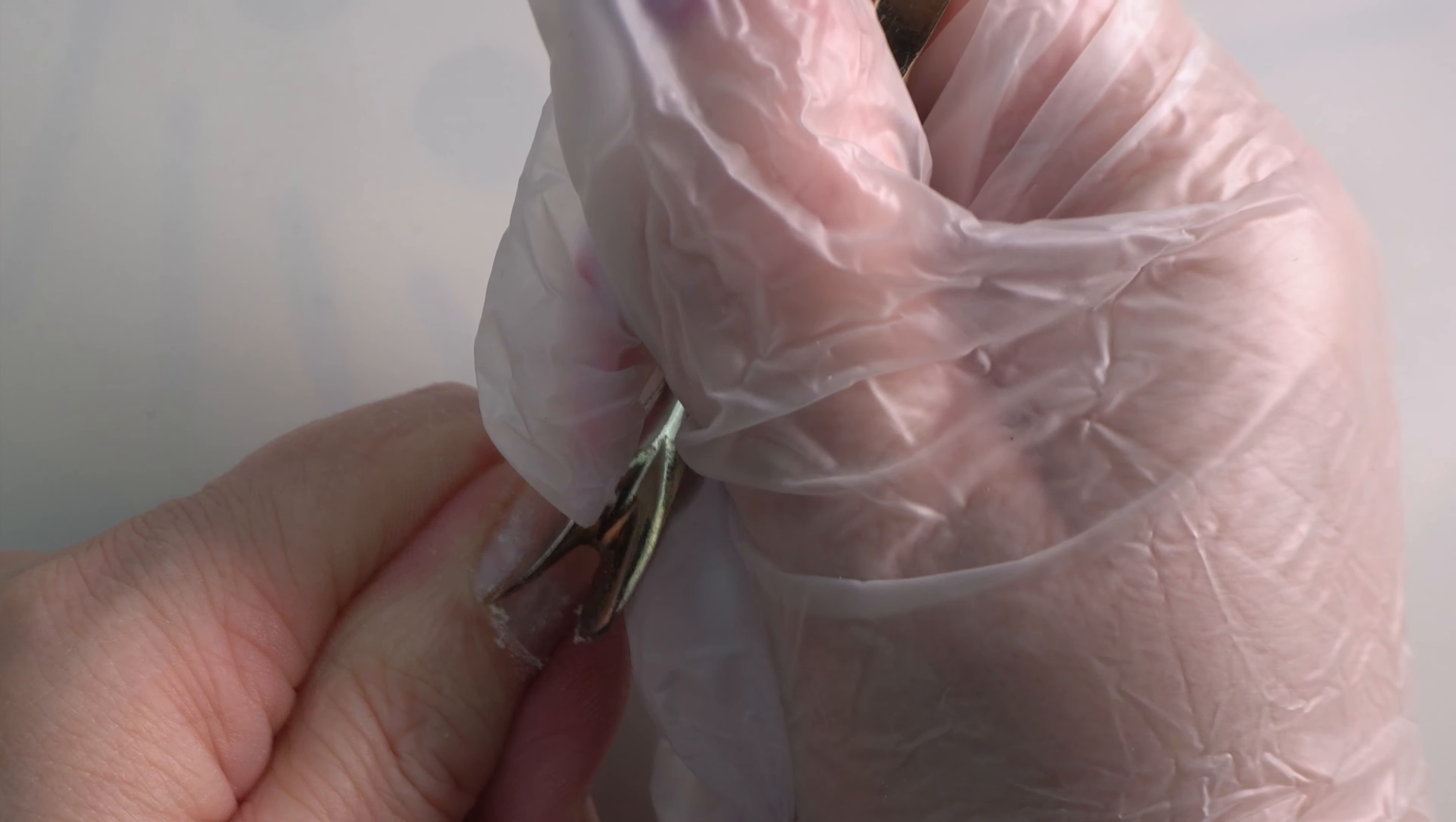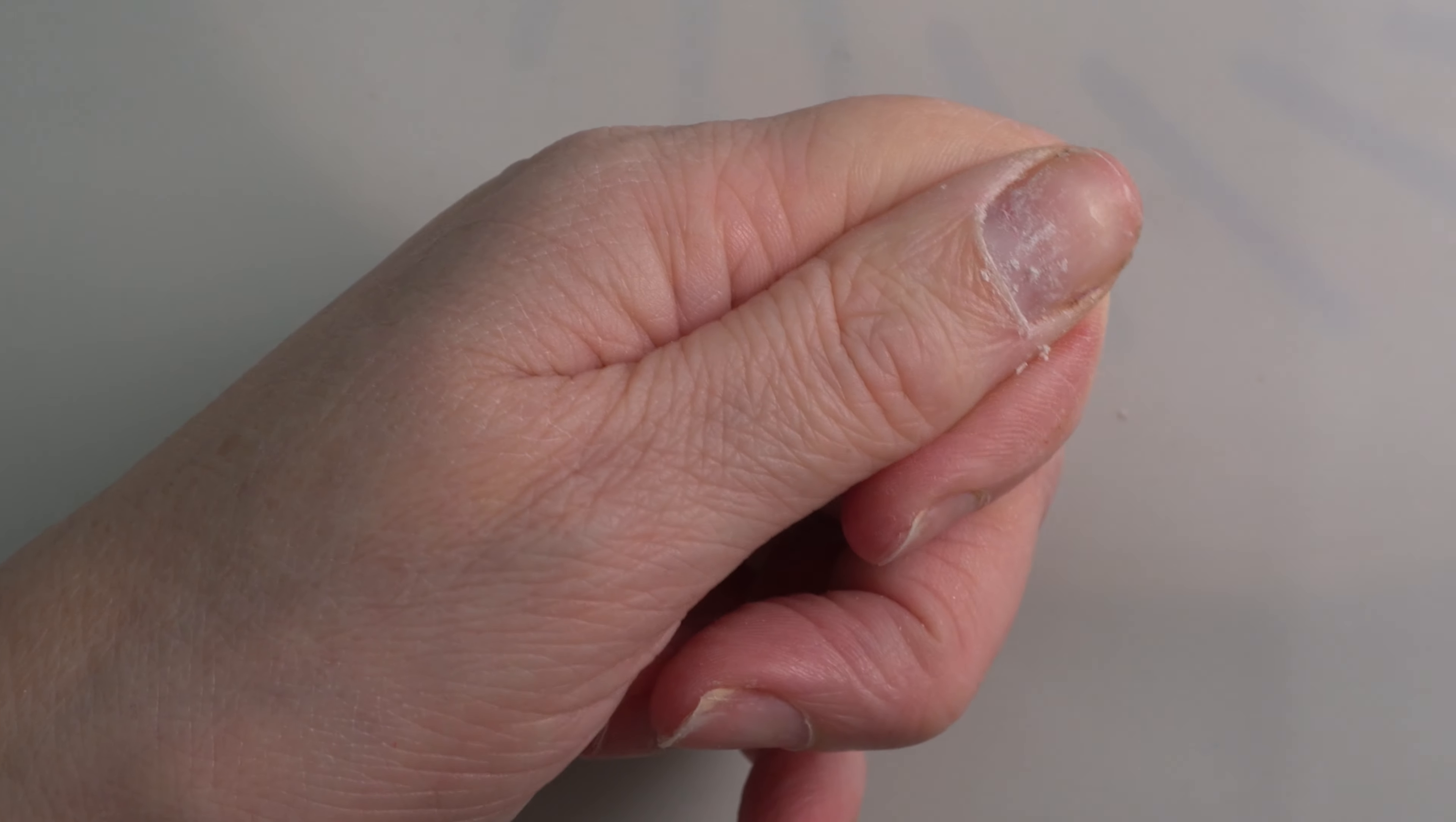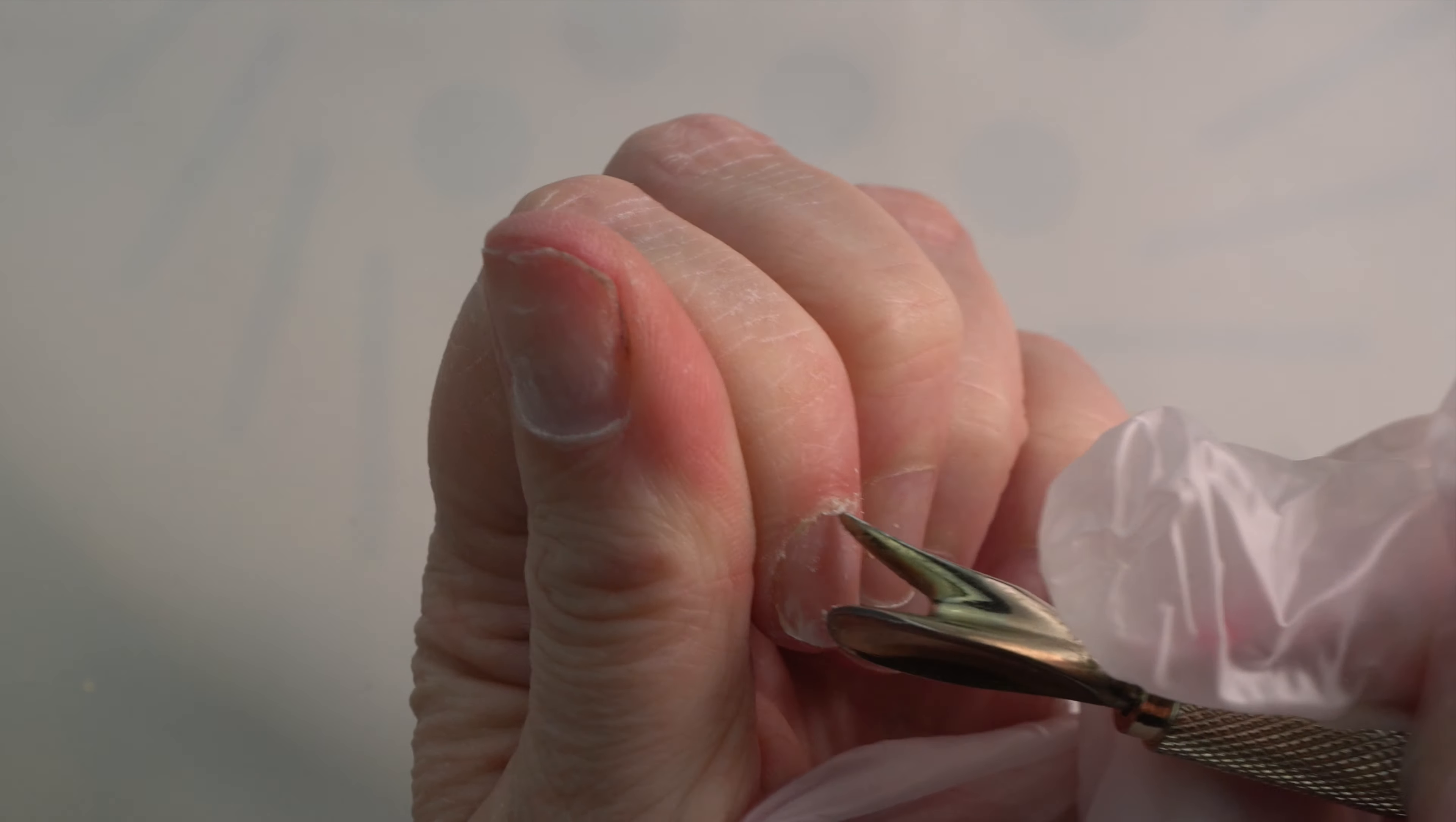Once we've done that, we're going to flip the wand over and use the hook to hook off any excess dead skin. I am doing this one in real time, but the rest will be sped up just for your convenience, so you're not watching the same thing.